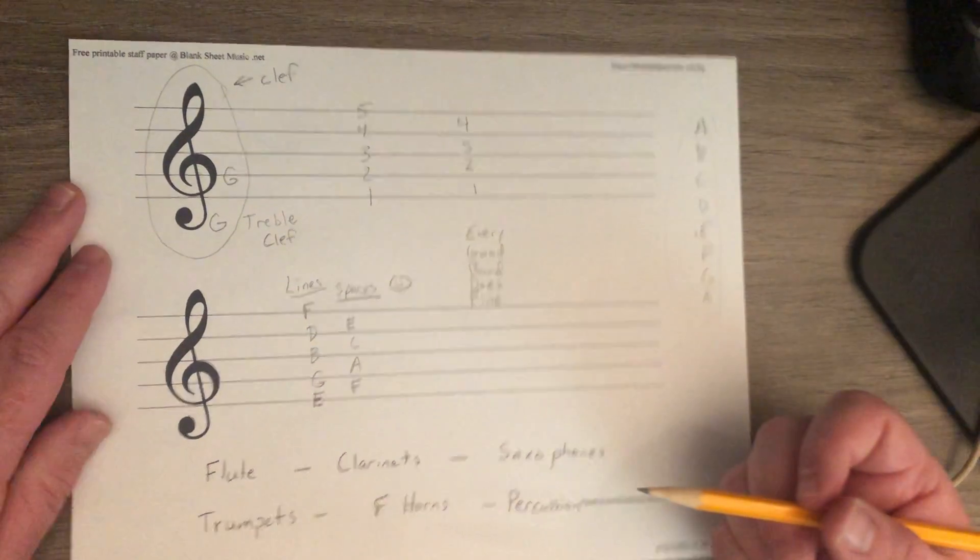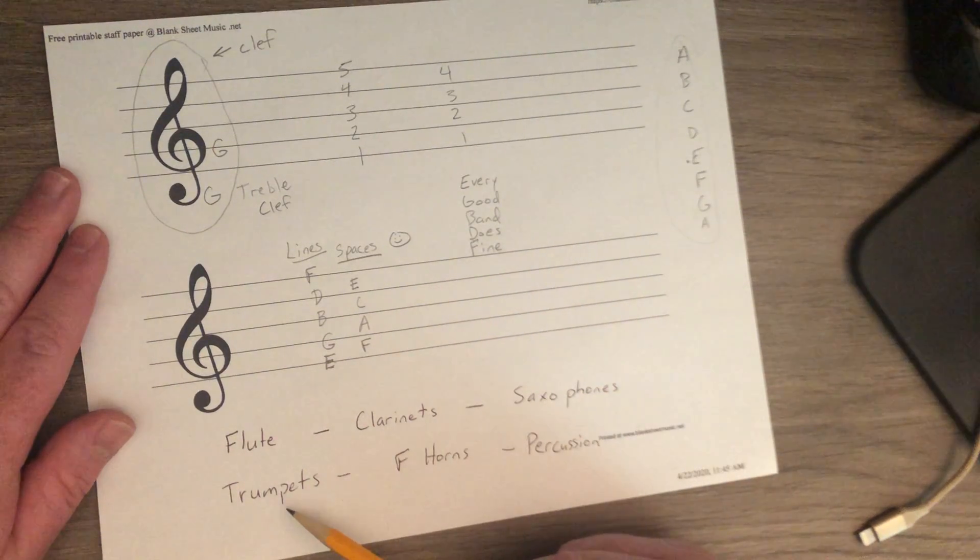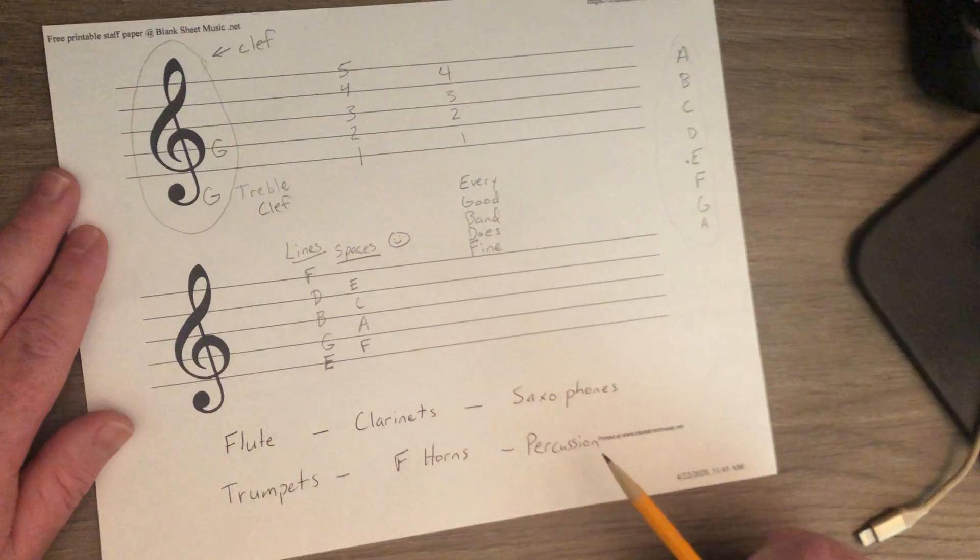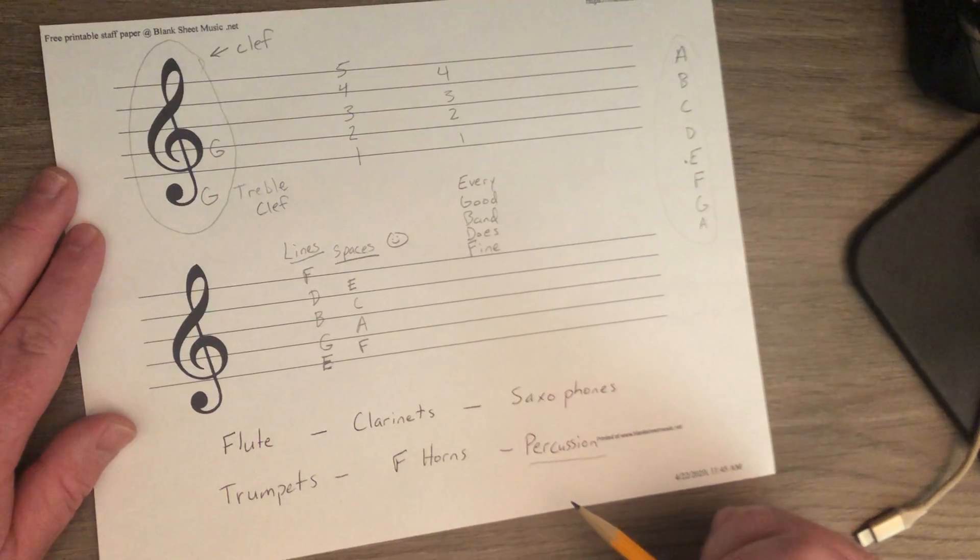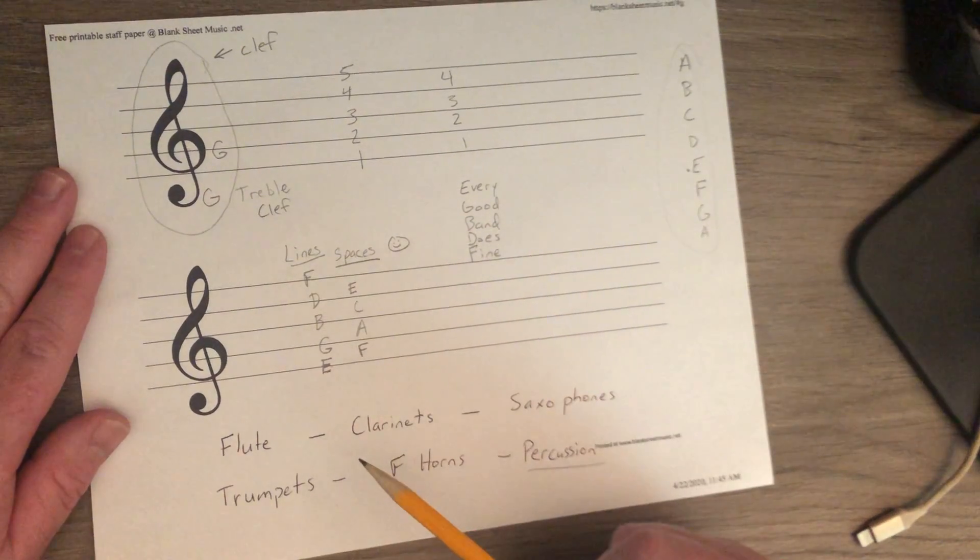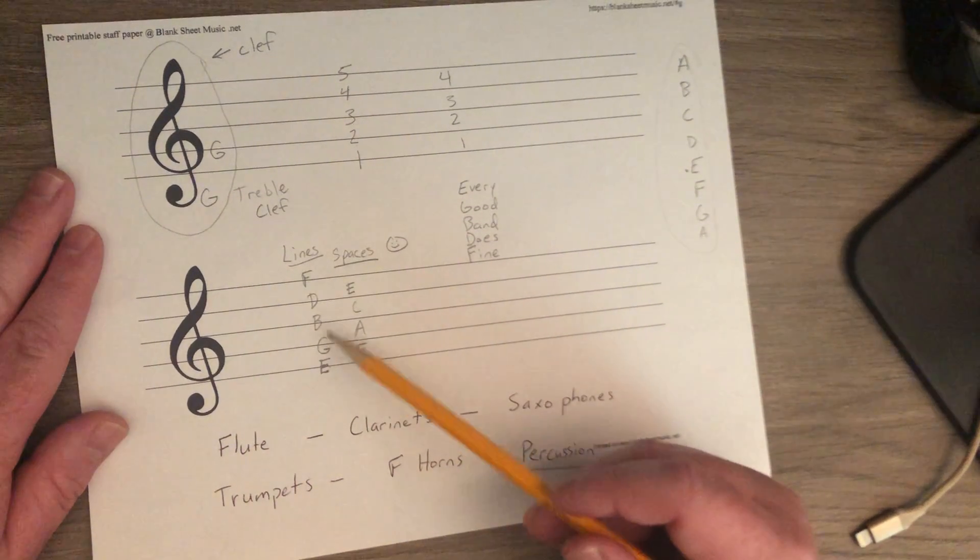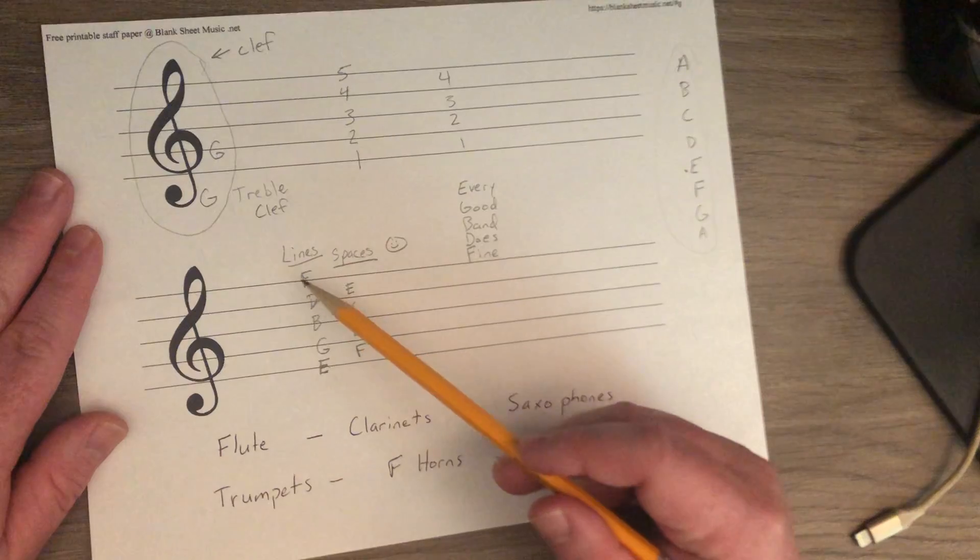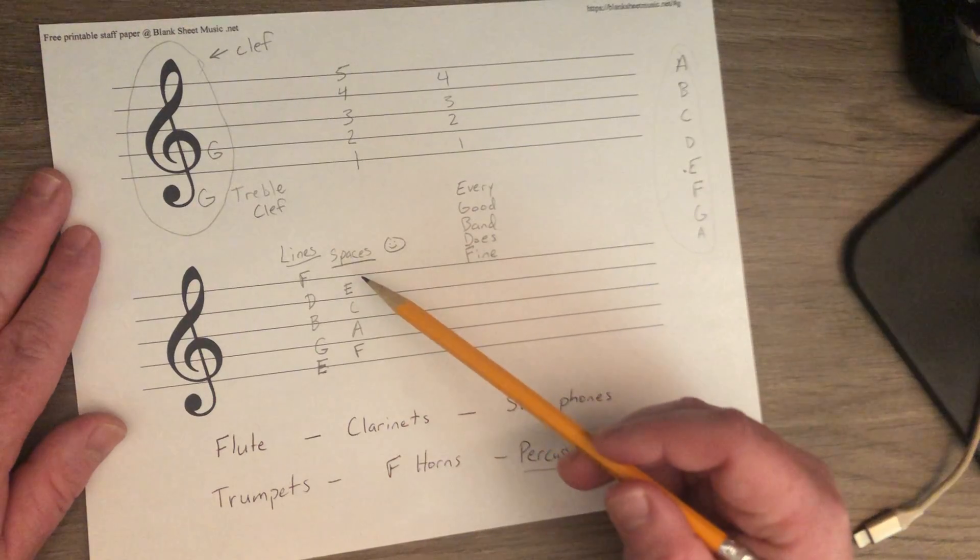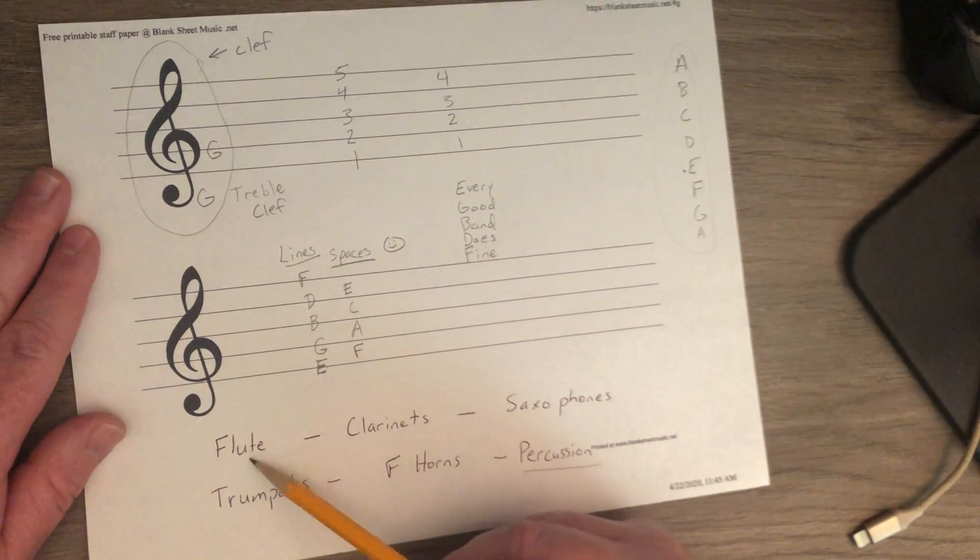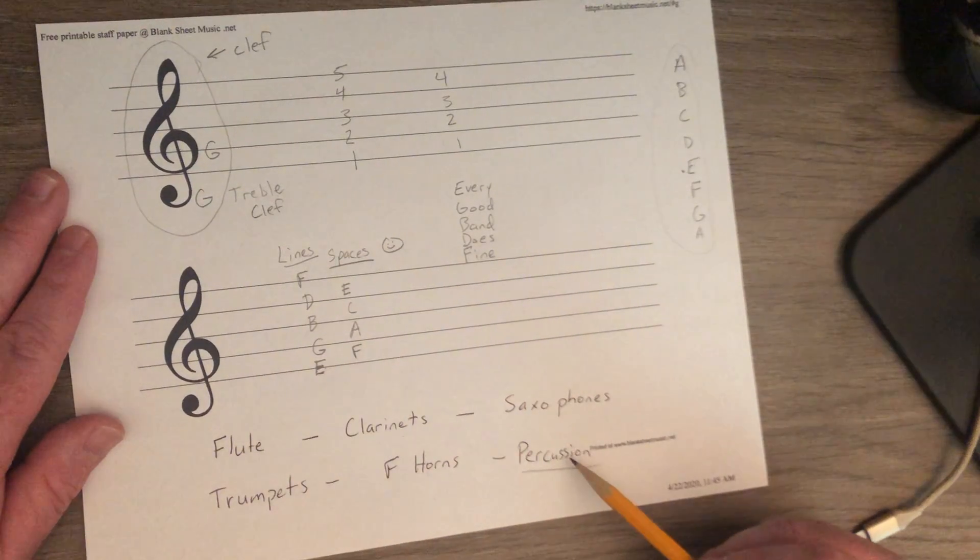All right? So, the instruments that use treble clef are flute, clarinets, saxophones, trumpets, F horns, and percussion. Now, percussion, you're going to have to learn both clefs. But, we'll start with this one. So, remember your lines, starting from the bottom, in treble clef are every good band does fine. And the spaces are face. F, A, C, E. And that's for anyone playing flute, clarinet, saxophone, trumpet, horn, or percussion.